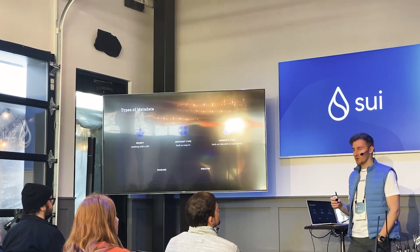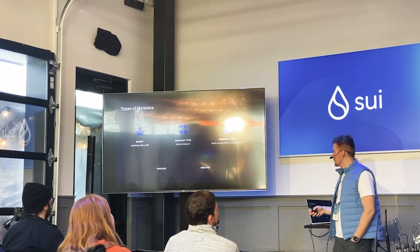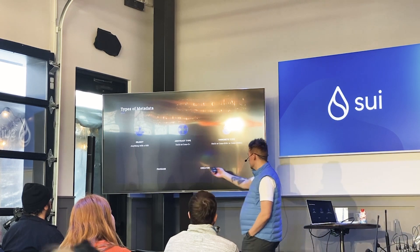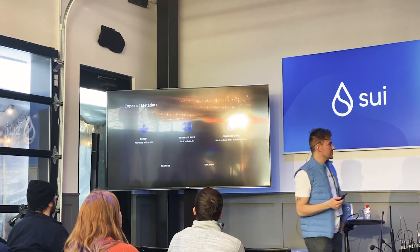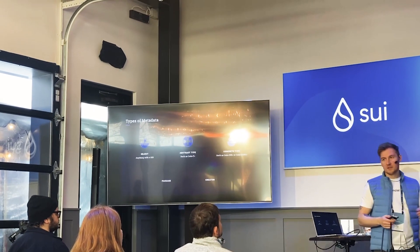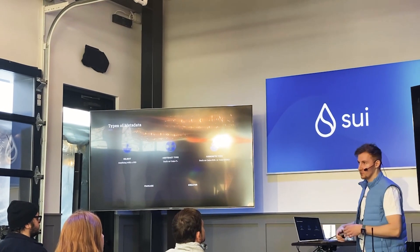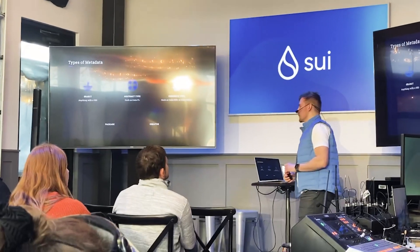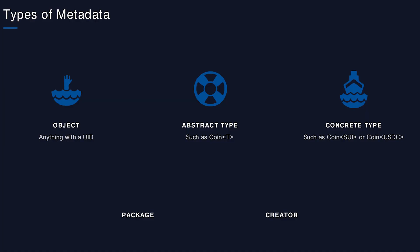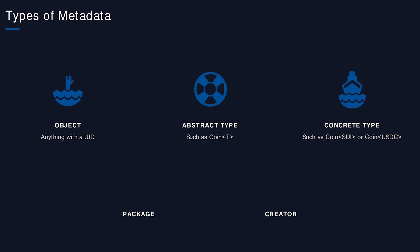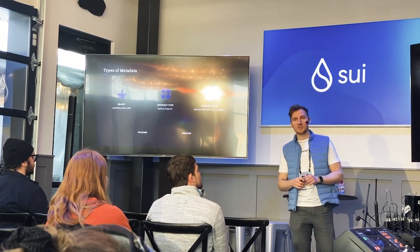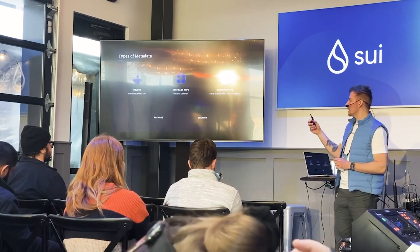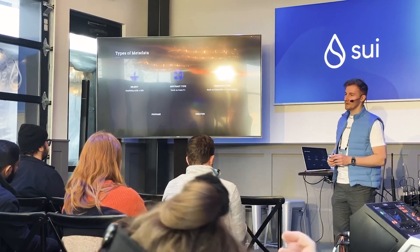More generally, I've defined so far five types of metadata. We've talked about object metadata — that's specific just to a single object. Then there's abstract type and concrete type metadata. Dimir has something along these lines, and in the coin program there's a notion of concrete type metadata — similar to coin metadata.